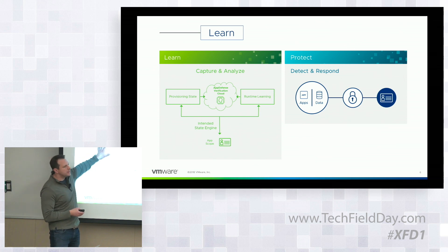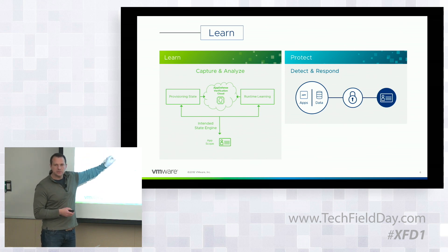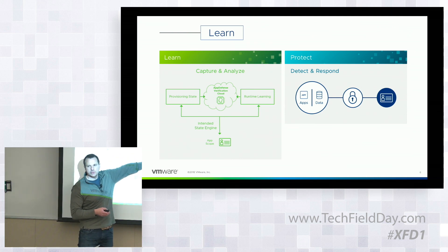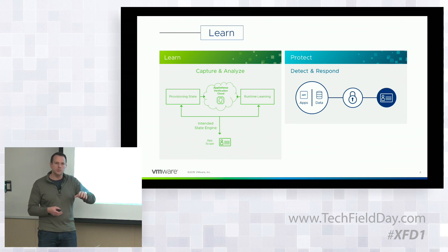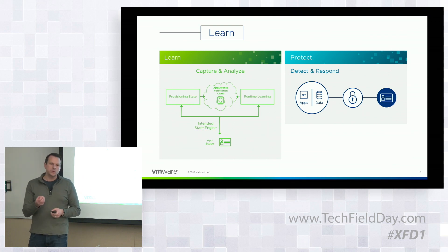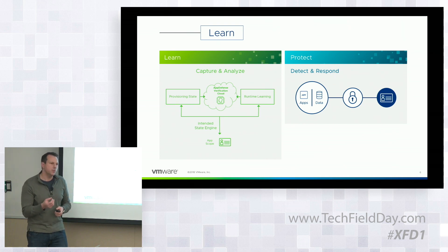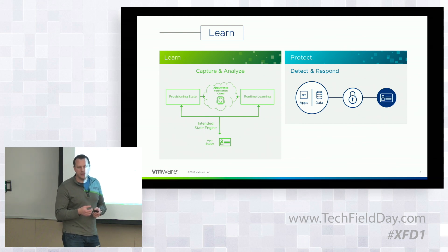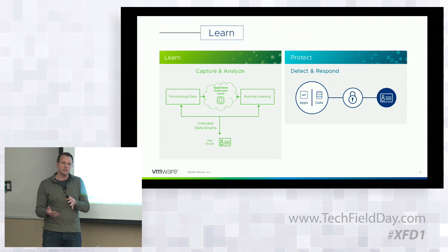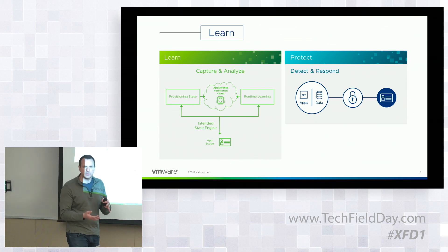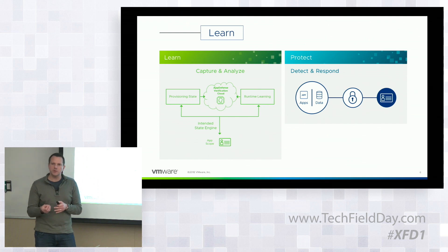We combine what we refer to as provisioning states or configuration states with runtime learning. Provisioning state covers things like pushing a new application via Kubernetes, provisioning new systems via Puppet or Ansible Tower — we use those as initial indicators of the security policy. Specifically, we look at what type of machine you're pushing and what type of application you're running on top of it, which allows us to create profiles. For example, a Windows 2012 machine gets a default profile, and if you're running SQL Server on top of that, we push a specific SQL Server profile.